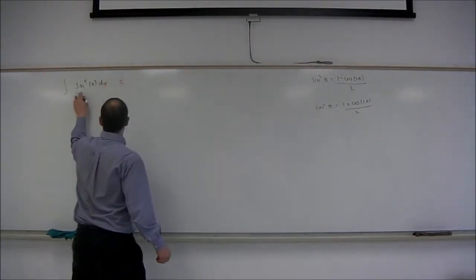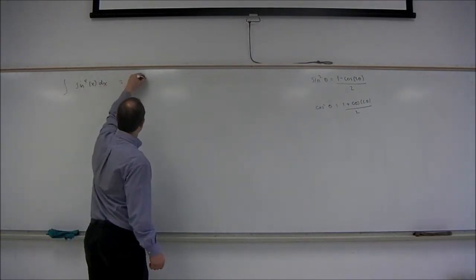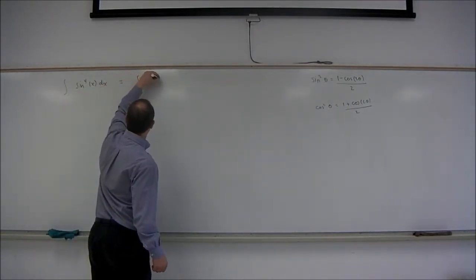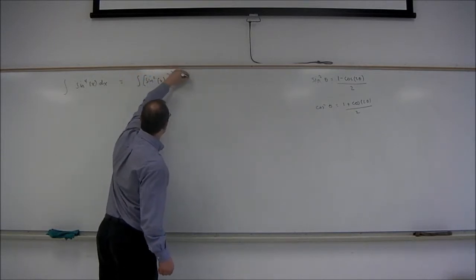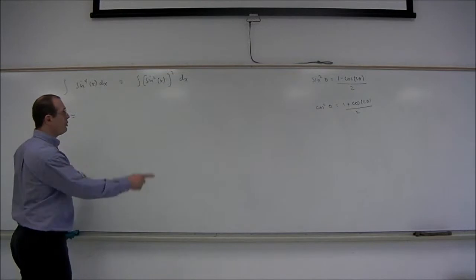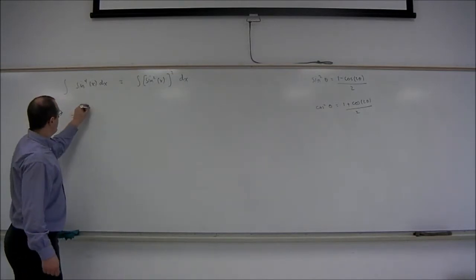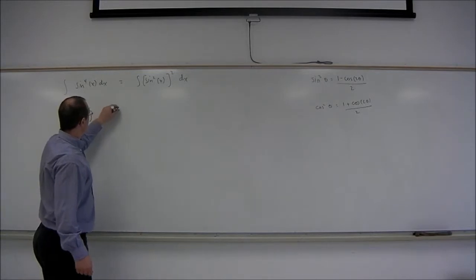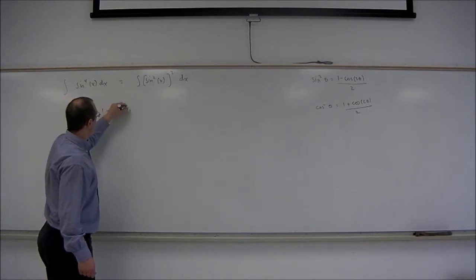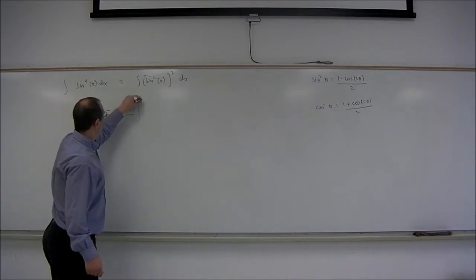So we begin by writing sine to the fourth as sine squared x quantity squared. And now using the identity, this is 1 minus cosine of 2x over 2 quantity squared.